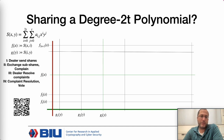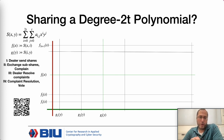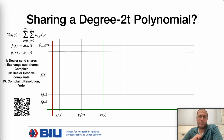In the first round, the dealer sends each party its two univariate polynomials. Note that f is a univariate polynomial of degree 2t, while g is a univariate polynomial of degree t. Then, exactly as in BGW, party P_i evaluates f_i and g_i on point j and sends that to party P_j.